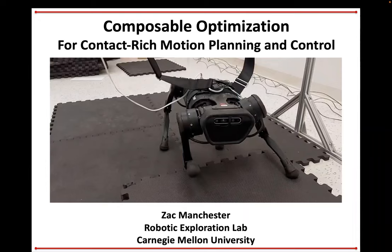He holds a Bachelor of Science in Applied Physics and a PhD in Aerospace Engineering, both from Cornell. He then moved to Harvard to work on his postdoc, and he also worked at Stanford, at NASA Ames Research Center, and at Analytical Graphics. His research interests include motion planning, control, and numerical optimization, and in particular he works on applications to robotic locomotion and spacecraft guidance, navigation, and control.